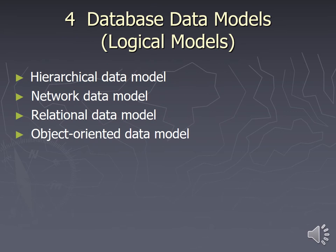When looking at database models, there are essentially four different types. The hierarchical model organizes data into a hierarchy from which you can pull different pieces. The network model, instead of a pyramid or tree hierarchy, has a network all on one level but uses keys to relate data to different pieces of other tables through a network of organization. These two types of databases are not used in GIS.